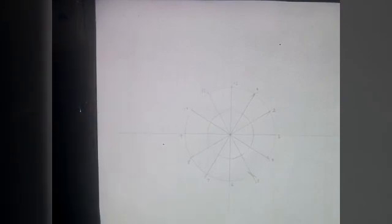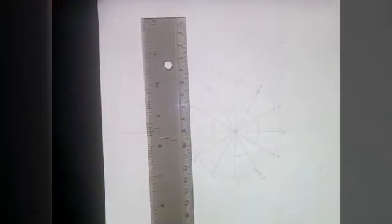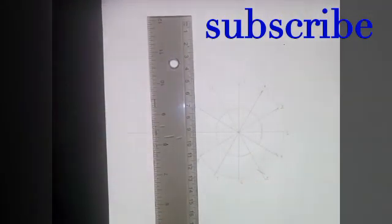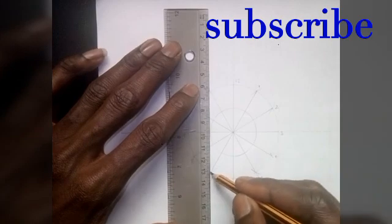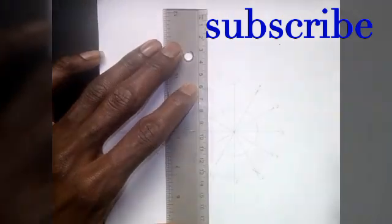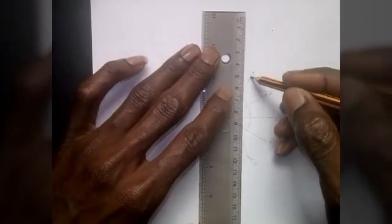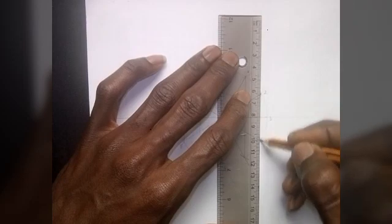We'll join the lines, just as 12 and 6 are joined together vertically. We'll do the same as 11 and 7, also 10 and 8, 1 and 5, 2 and 4.